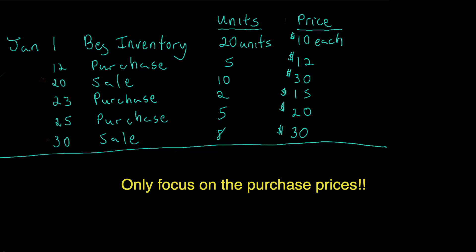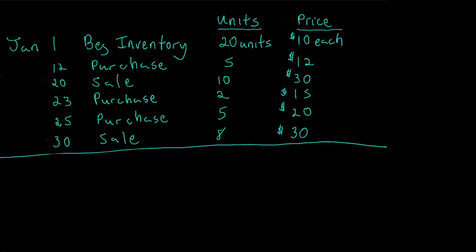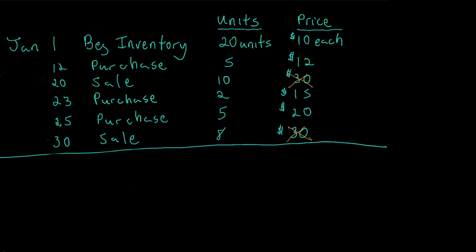Remember, a merchandising company will always sell goods at a higher price than they pay for them. Therefore the selling price equates to the revenue earned, which allows them to calculate gross profit. But we're not concerned with that at the moment. What I like to do is scratch out the sales price so it doesn't confuse you as we use this shortcut method. So with that being said, we're ready to go into the calculation using LIFO.